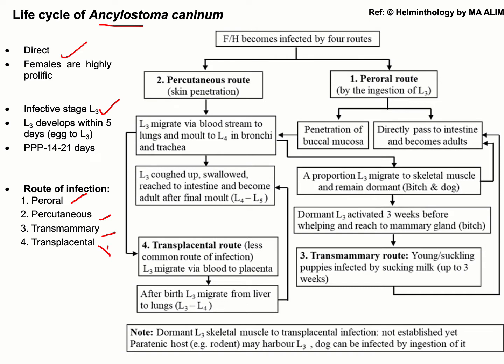The transplacental route is the least common route of infection. In the life cycle, the predilection site for the adult parasite is the small intestine, where the female parasite lays eggs. The eggs are passed through the feces, and in the environment the eggs hatch to produce the infective stage, L3.